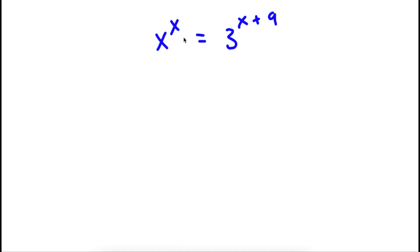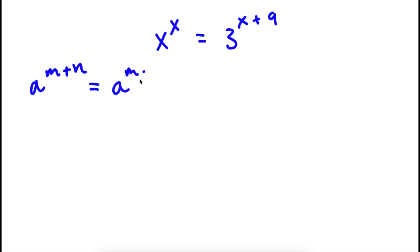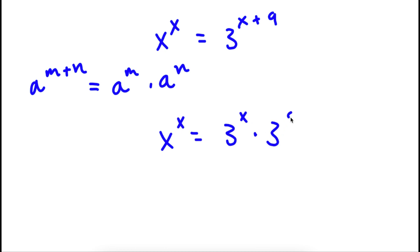Alright, so I have x to the power of x is equal to 3 to the power of x plus 9. Now, if I have something in the form a to the power of m plus n, this is the same thing as a to the power of m times a to the power of n. So in this case, I have 3 to the power of x plus 9, and I can rewrite that as 3 to the power of x times 3 to the power of 9.